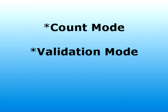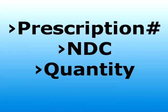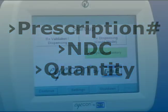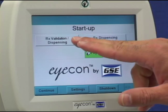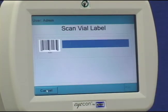In order to use the ICON in validation mode, your vial barcode label needs to be configured to include the prescription number, NDC, and quantity. Contact the ICON tech support team for setup instructions. At the startup screen, press the validation button and then the continue button to enter the validation mode.